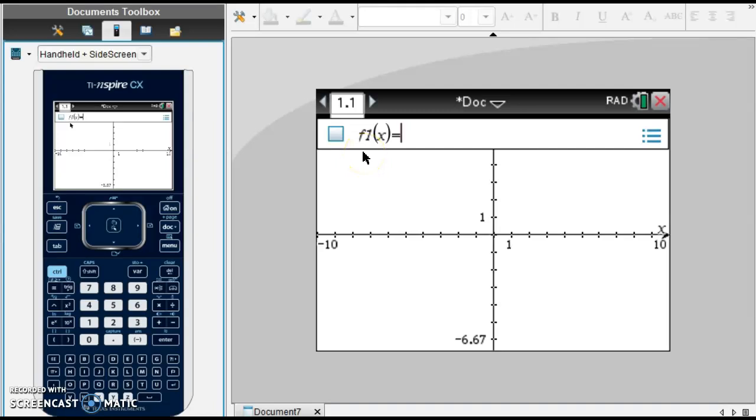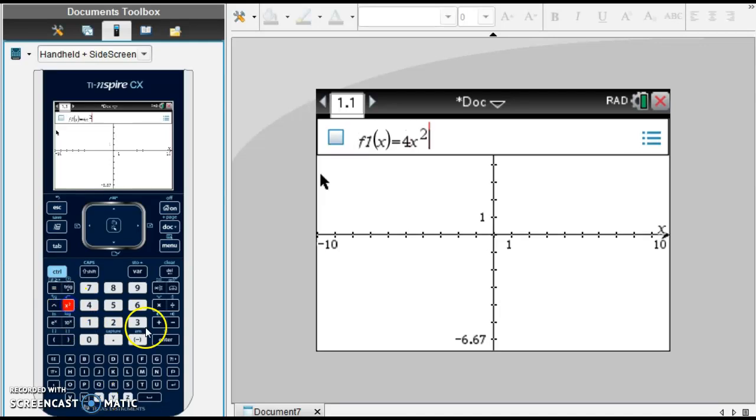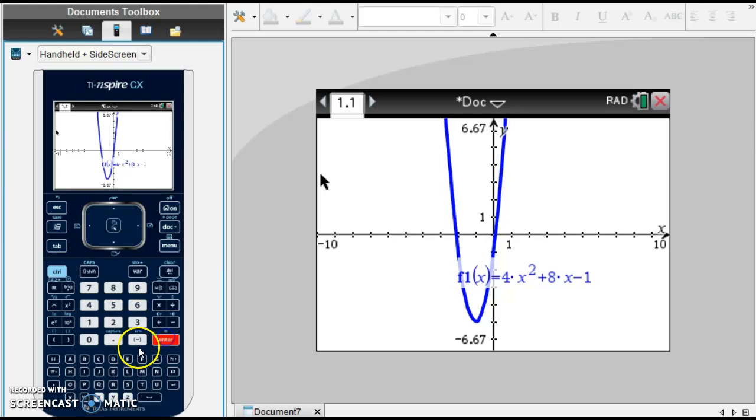In f1 of x, we're going to enter our equation, which is 4x squared plus 8x minus 1. And hit enter so we can see our picture.